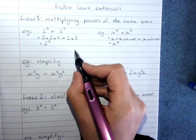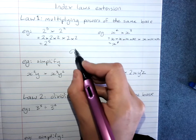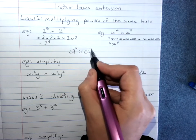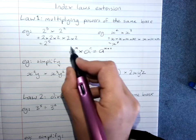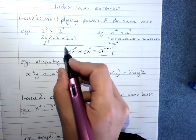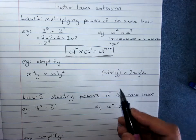And we can write an algebraic way of putting that. a to the power of m times a to the power of n equals a to the power of m plus n. That's the way of writing the first law as an algebraic rule.